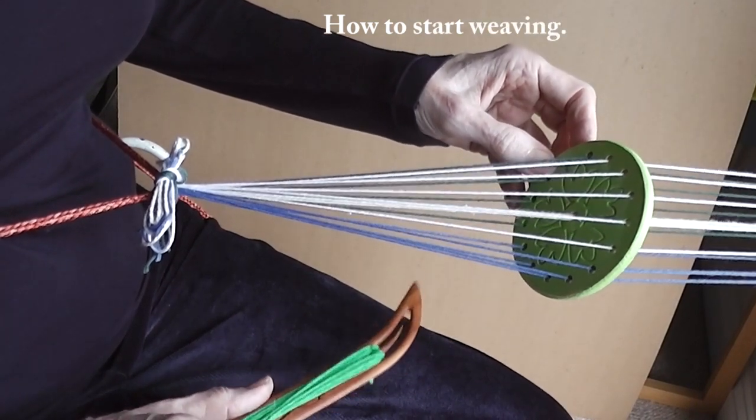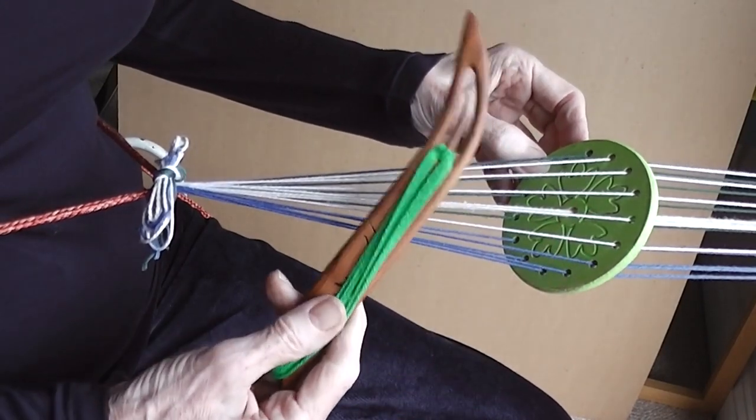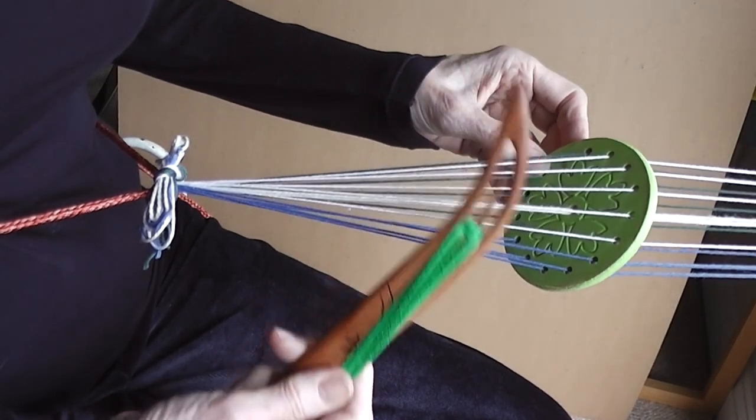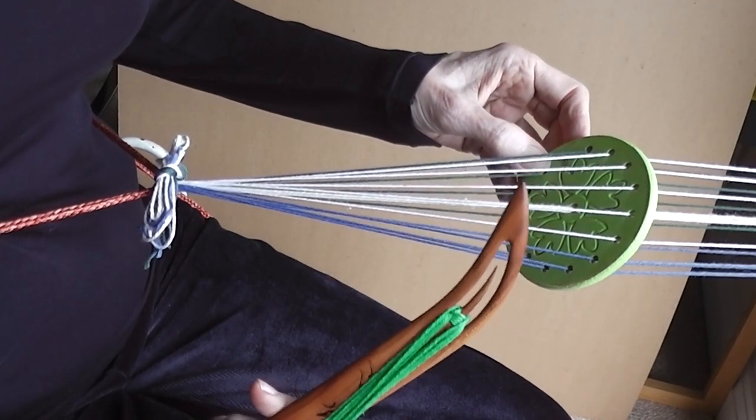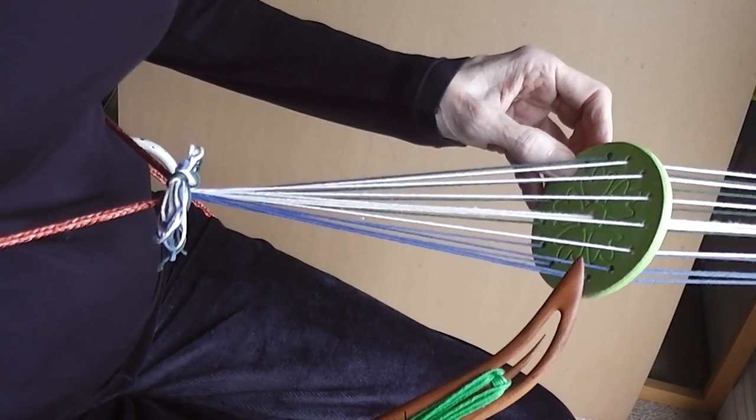I'm now going to show you how to start weaving the cord. I've got the weft in a different color so you can see it clearly. I've tied the warp to my back strap and everything's ready.